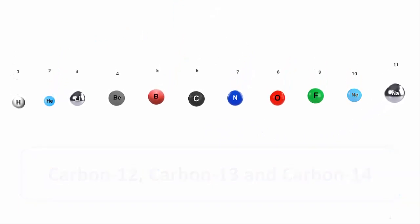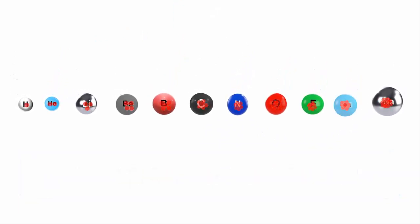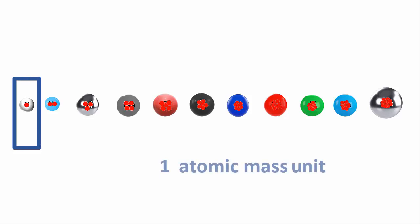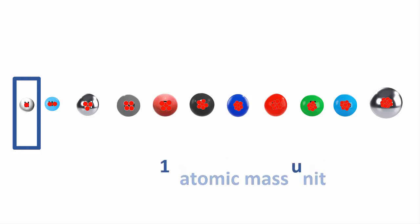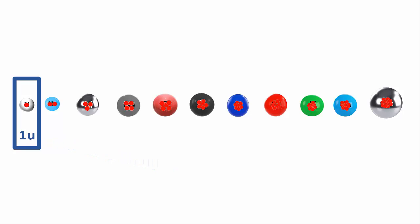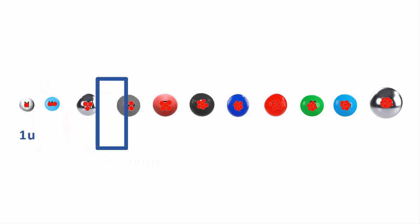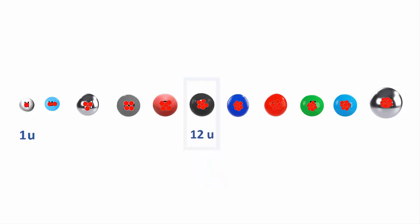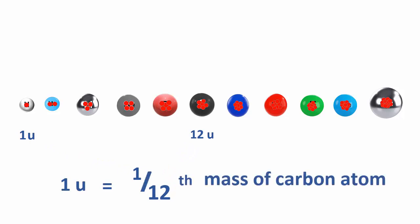The atomic mass scale was originally based on the mass of a hydrogen atom being equal to one atomic mass unit. This was later changed to the mass of a carbon atom being equal to 12U, updating the definition of 1U as one twelfth of the mass of a carbon atom.